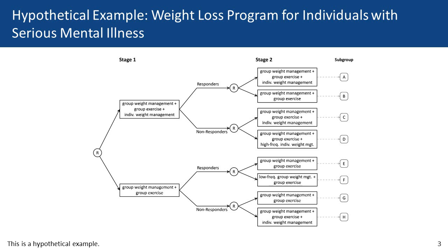We then follow these individuals for six months, at which point we assess whether they've lost weight — specifically whether they've lost five or more pounds in the first six months. Individuals who have lost five or more pounds are classified as responders, and responders are again randomized between two intervention options. Those responders who started with the three-component intervention are randomized between continuing that intervention or the group-only intervention, ending up in subgroups A or B at the end of the study after 18 months.